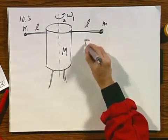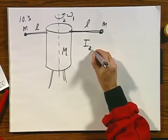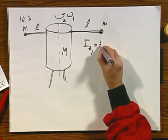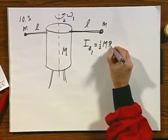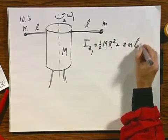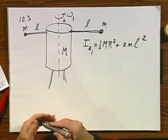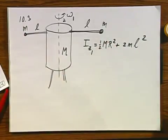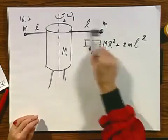The moment of inertia about the axis z in position 1 equals one half MR squared, which is the moment of inertia of the cylinder, plus 2ml squared, whereby this is obviously the additional moment of inertia due to these two arms.